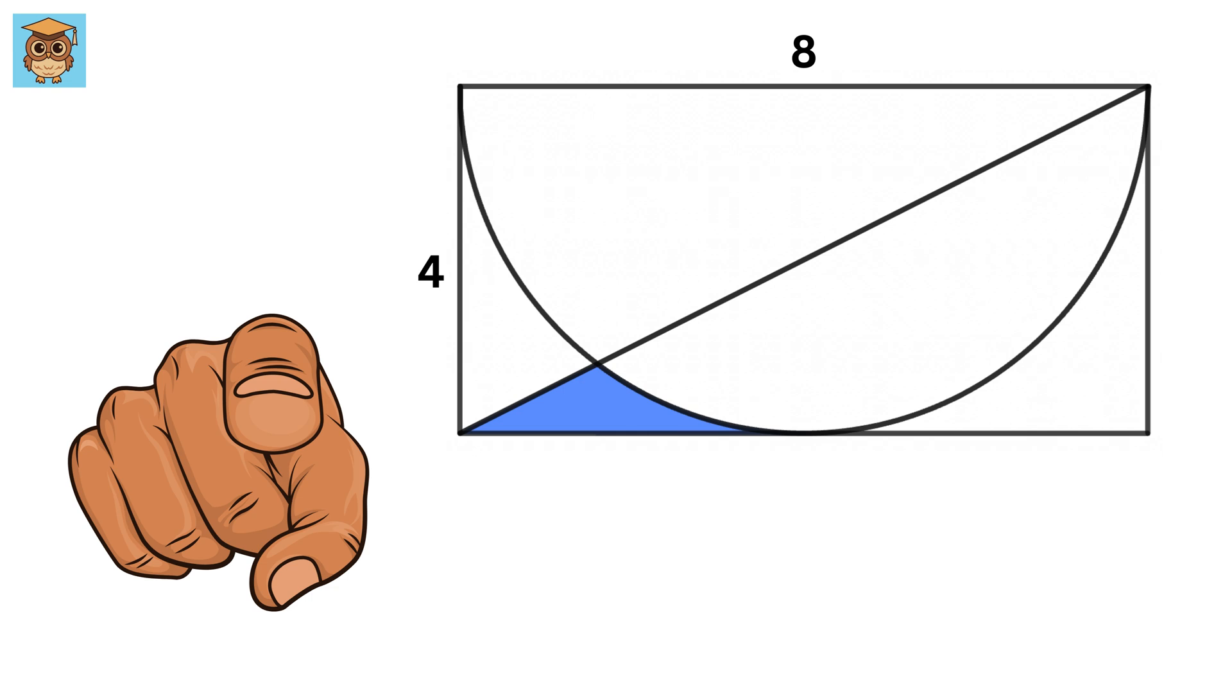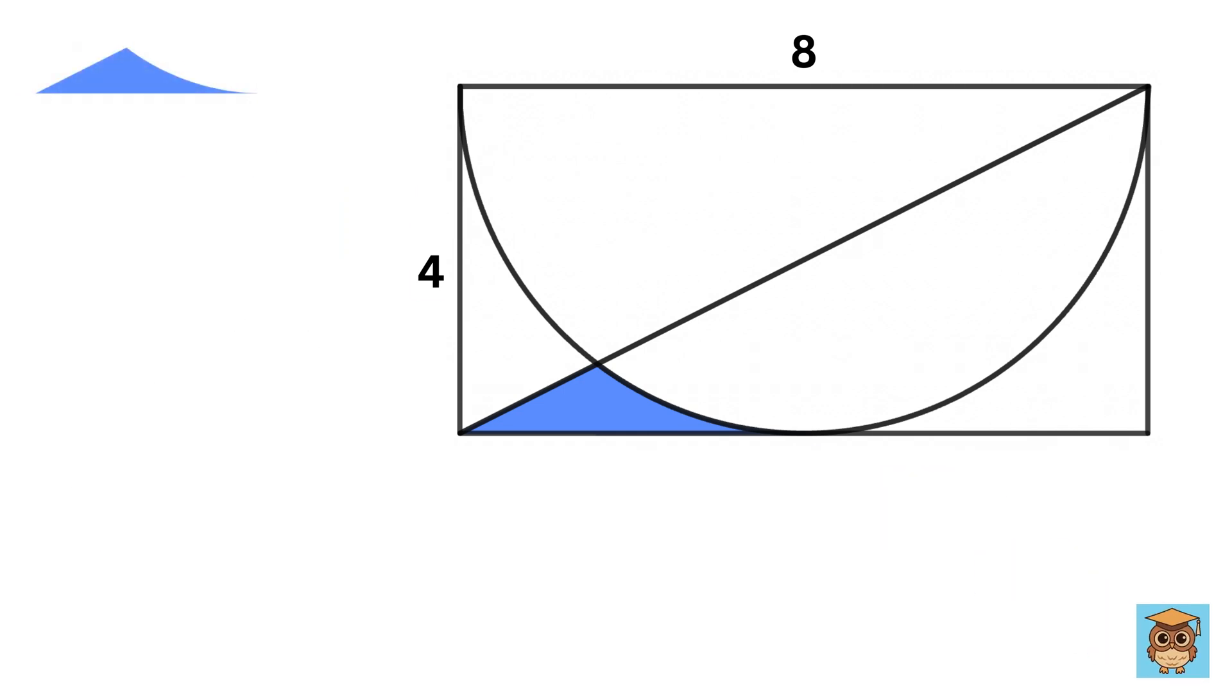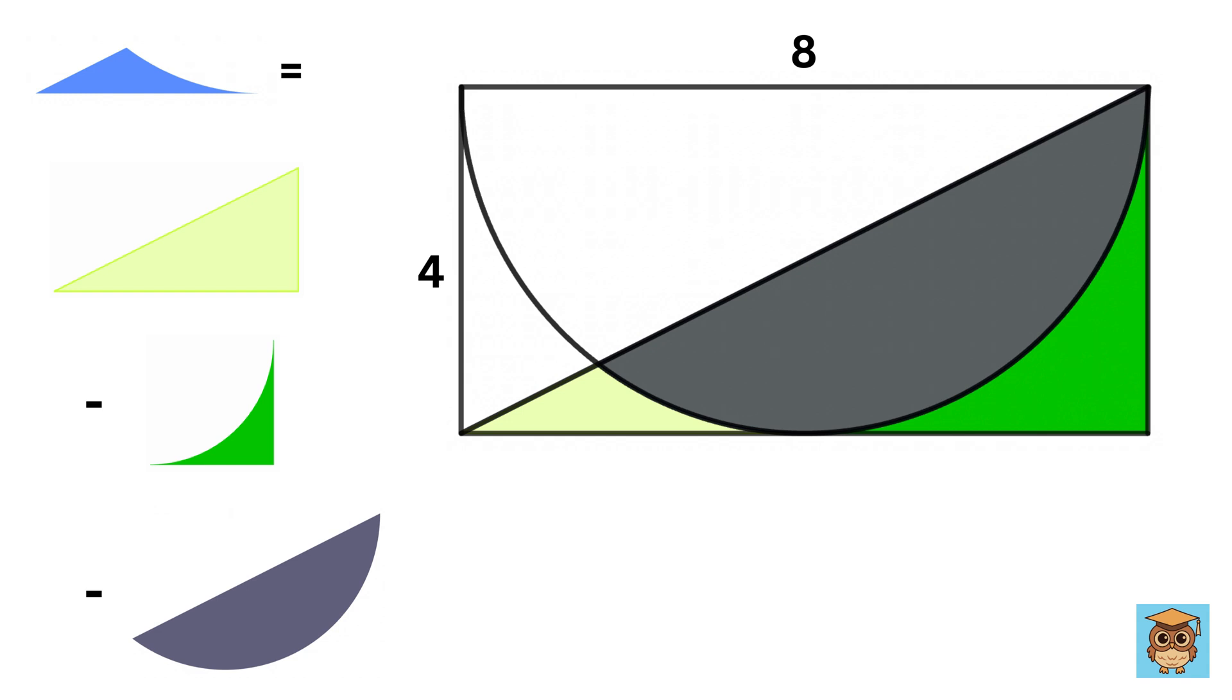So, can you solve it? Area of this shaded region is equal to the area of this right triangle minus the area of this region minus the area of this circular sector.